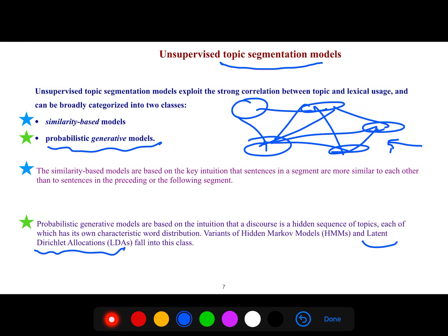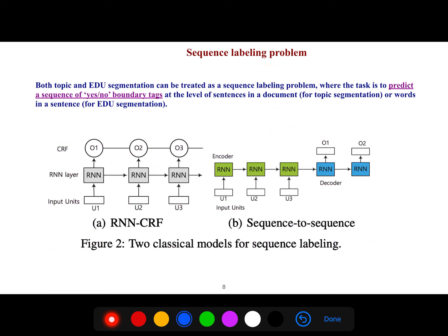Things like latent Dirichlet allocation that I've explained in my playlist for NLP. Also, hidden Markov models that I've explained. And sequence labeling problem. Both topic and EDU segmentation can be treated as a sequence labeling problem, where the task is to predict a sequence of yes-no boundary tags at the level of sentences in a document or words in a sentence.